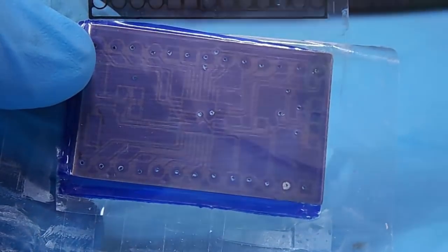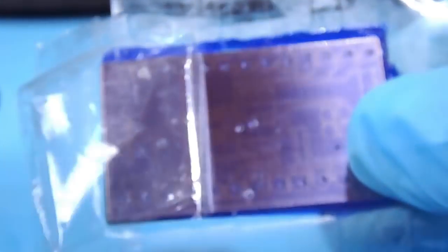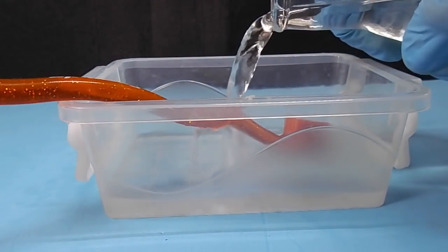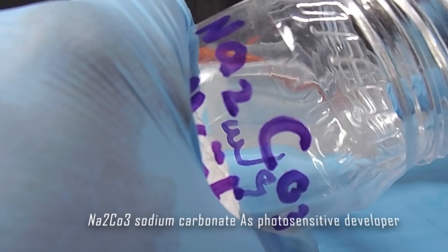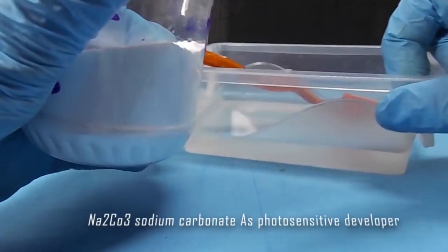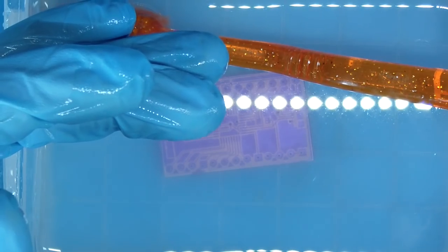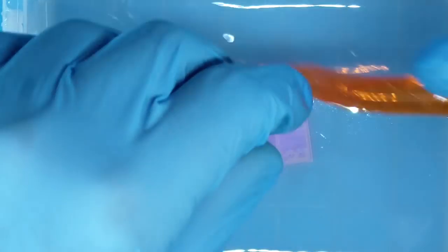Remove the protective layer and dissolve 200 ml of tap water with one or two grams of sodium carbonate. Soak the PCB inside and use toothbrush to remove the unexposed film. Now all clear.